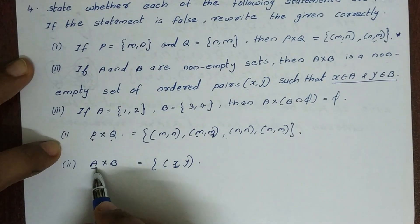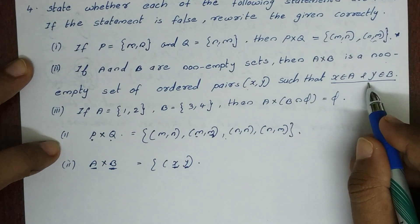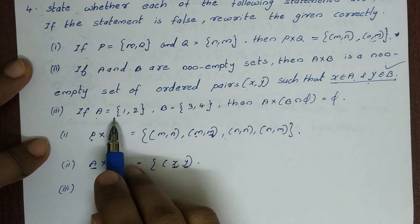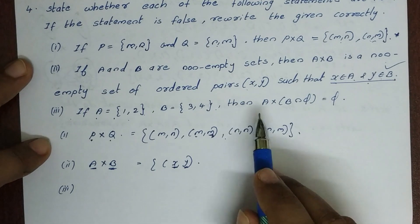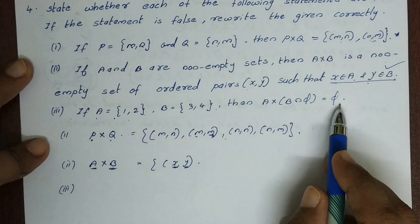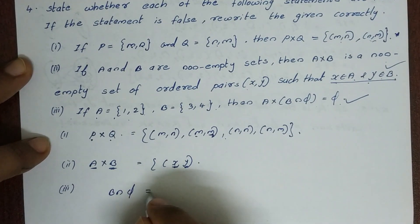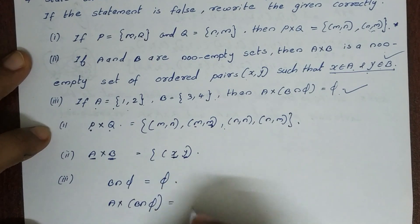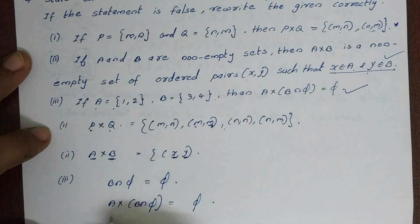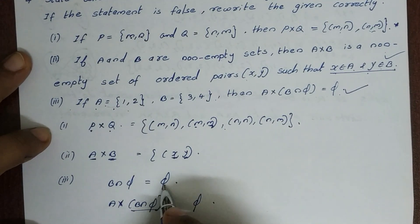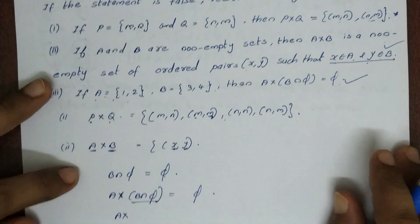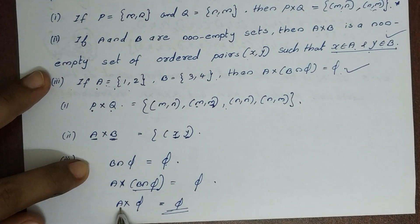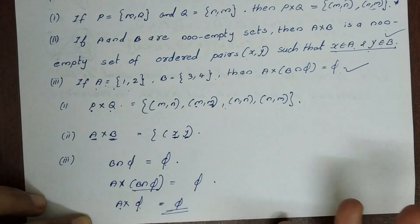Third: if A = {1, 2} and B = {3, 4}, then A×B ∩ B×A = ∅ (empty set). The intersection of A×B and B×A is the null set, so this statement is true.